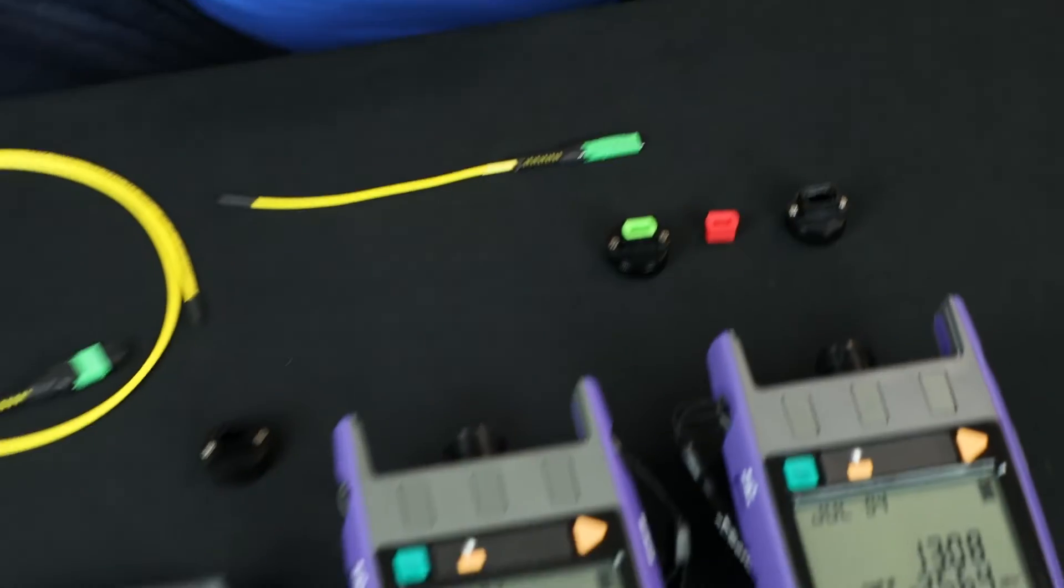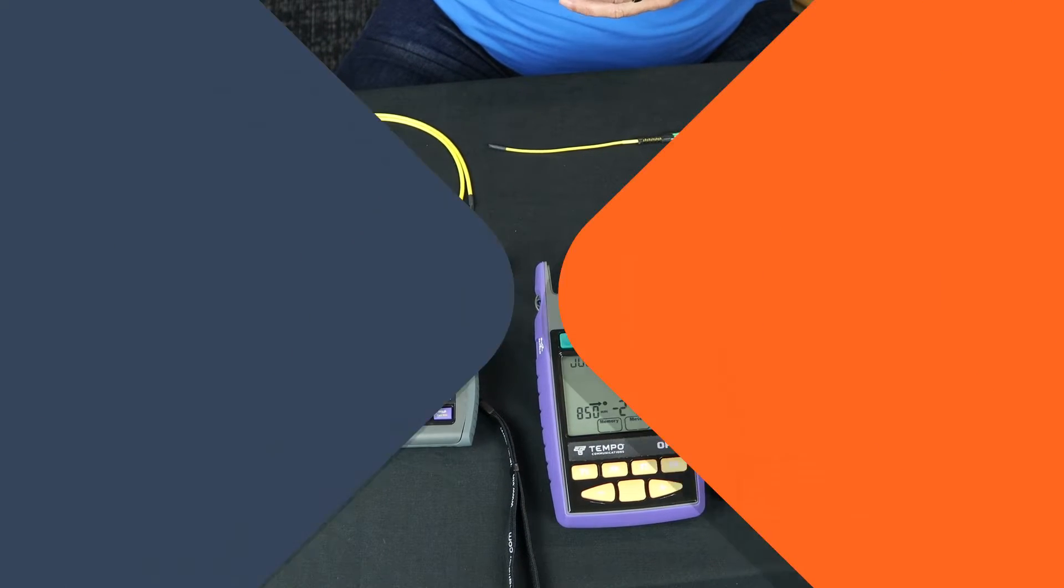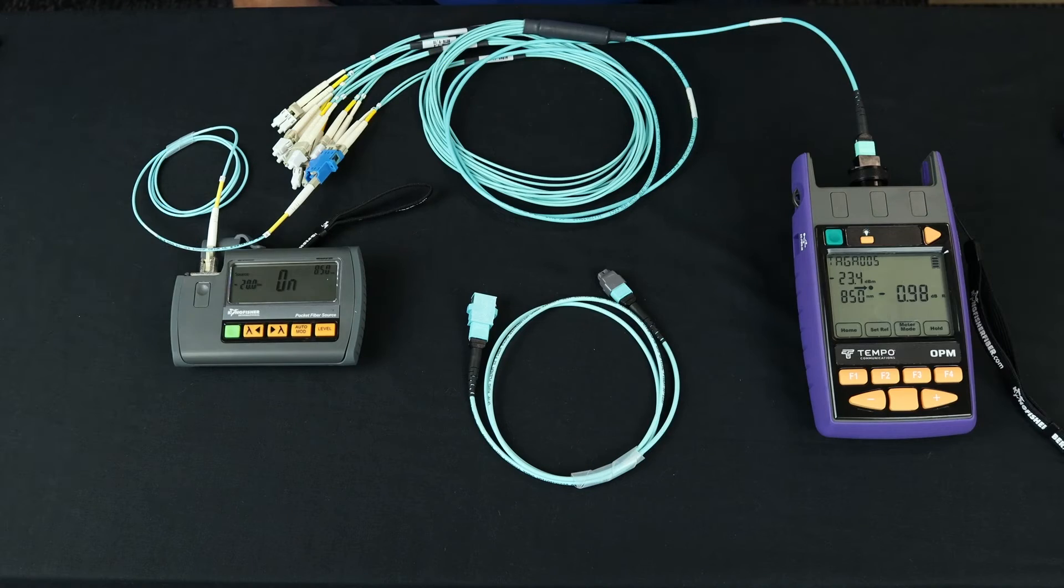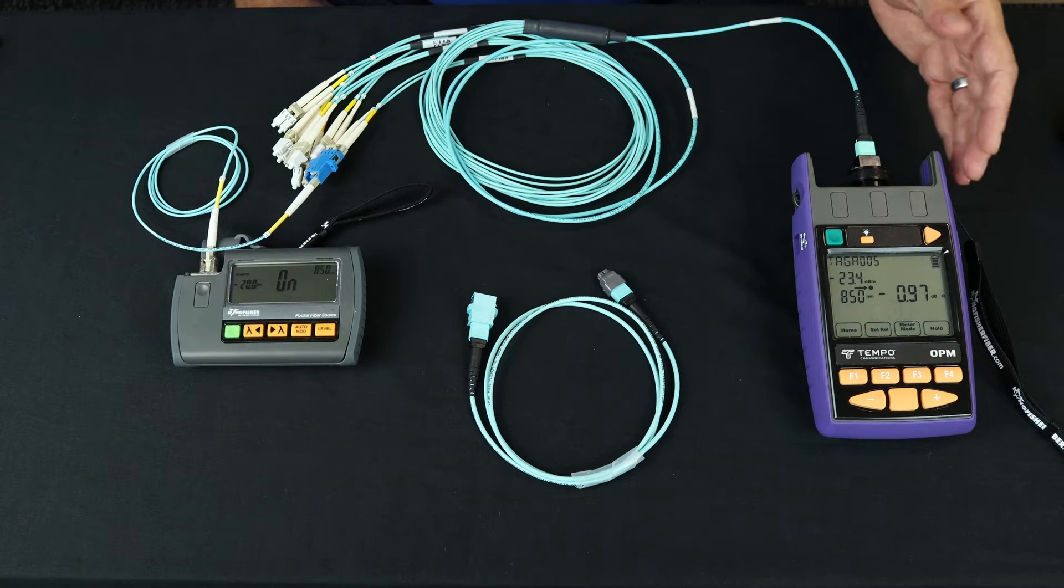I'm going to break this down and show you how to run a test on a 12 fiber MPO assembly. So I'm here with an XL series optical power meter from the Kingfisher Group Tempo.